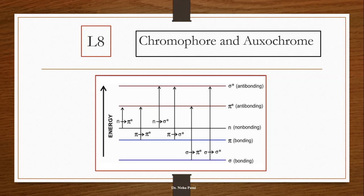So pi to pi star and n to pi star both. So chromophore could have these two possibilities while auxochrome, if you see...